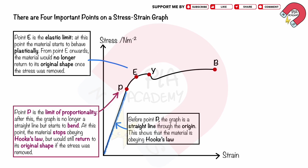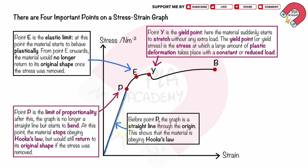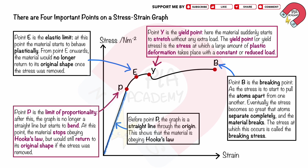Point E is the elastic limit. At this point, the material starts to behave plastically. From point E onwards, the material would no longer return to its original shape once the stress was removed. Point Y is the yield point — here the material suddenly starts to stretch without any extra load. The yield stress is the stress at which a large amount of plastic deformation takes place with a constant or reduced load. Point B is the breaking point, where the stress becomes so great that atoms separate completely and the material breaks. The stress at which this occurs is called the breaking stress.